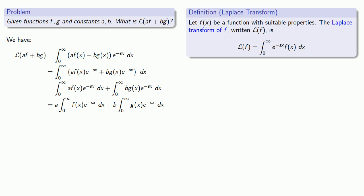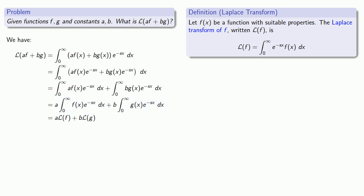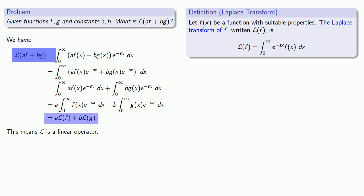We recognize these as the Laplace transforms of f and g. And if we put all these together, this means that our Laplace transform is a linear operator. We can take any linear combination af plus bg and evaluate it as the linear combination of the Laplace transforms of the individual functions. We like linear operators because they make our life so much easier.